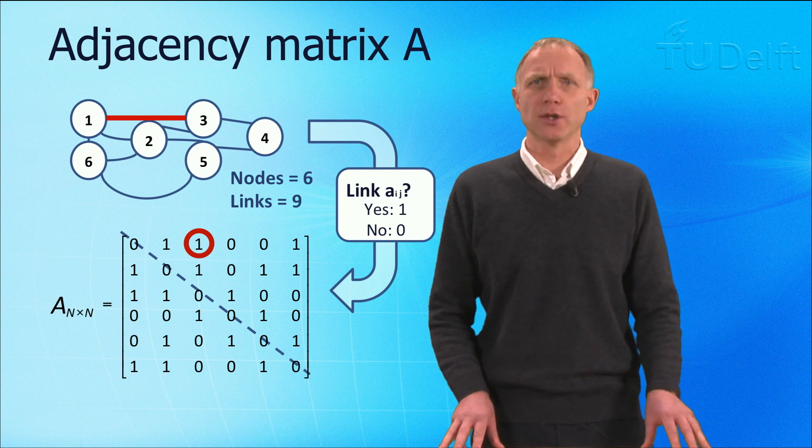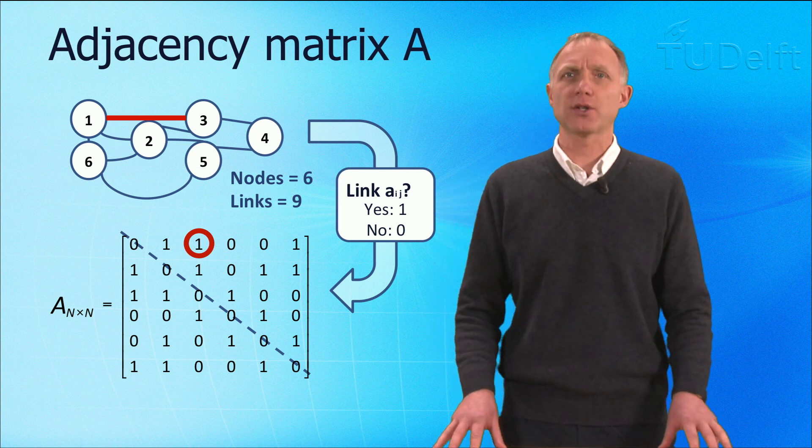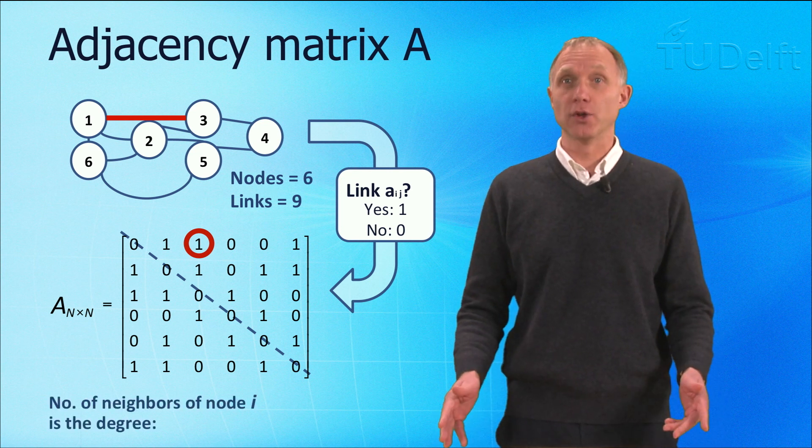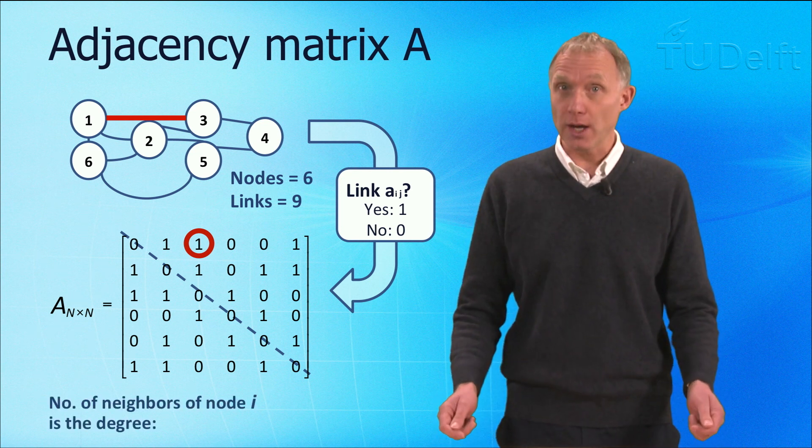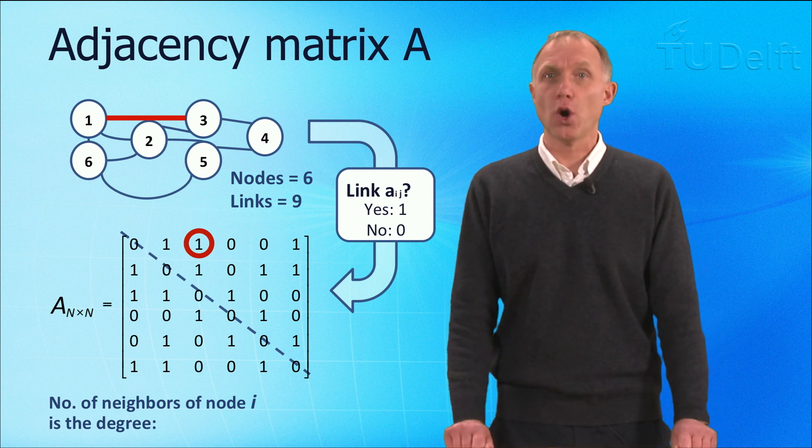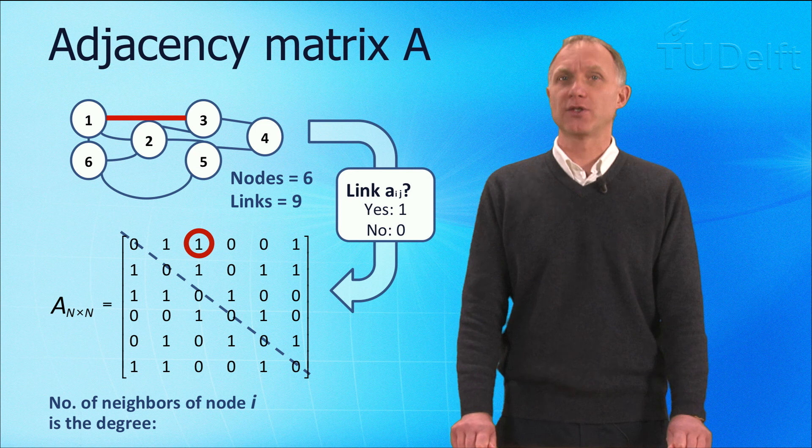Once the adjacency matrix is known, the topological properties of the networks can be computed. For instance, the number of neighbors of a node, called the degree of a node i, equals the sum of elements of row i of the adjacency matrix.